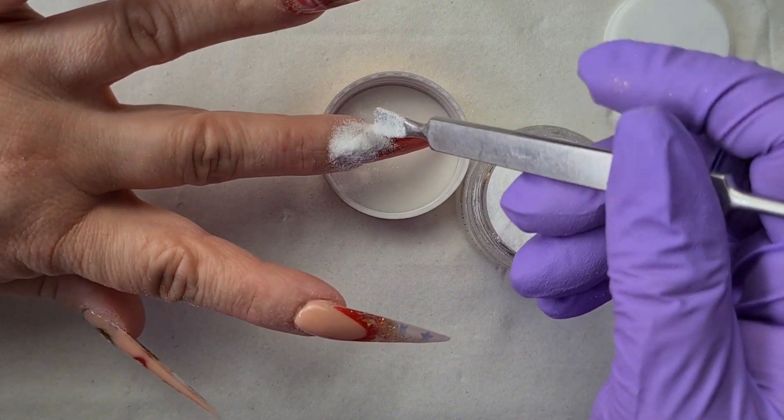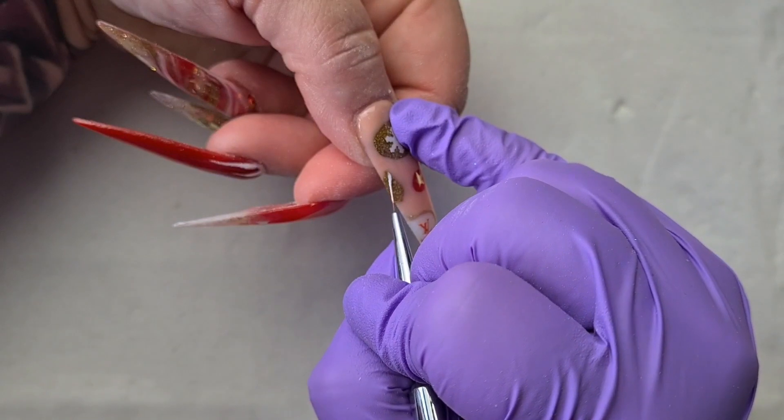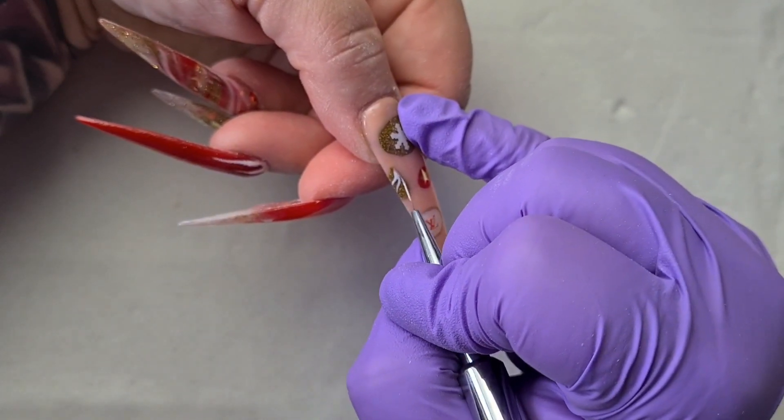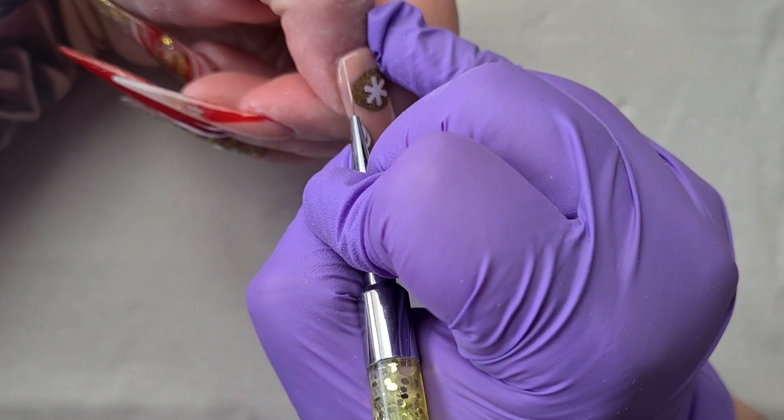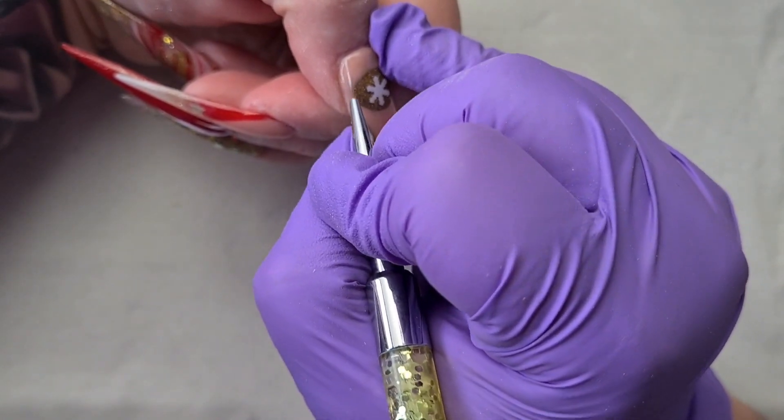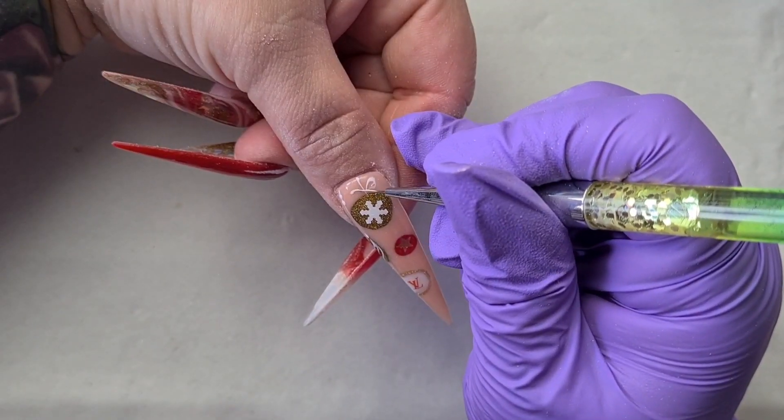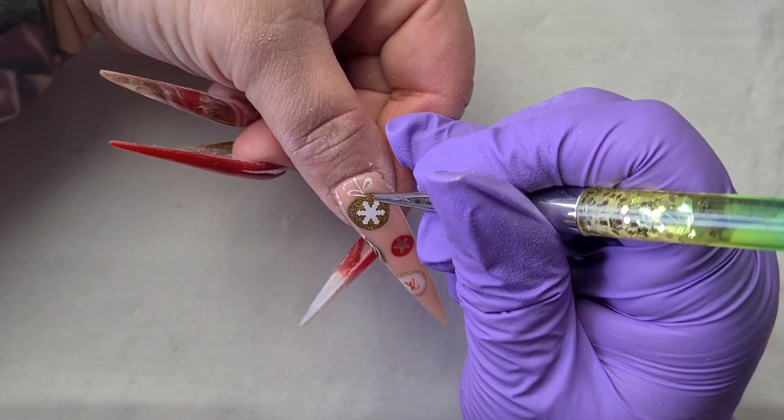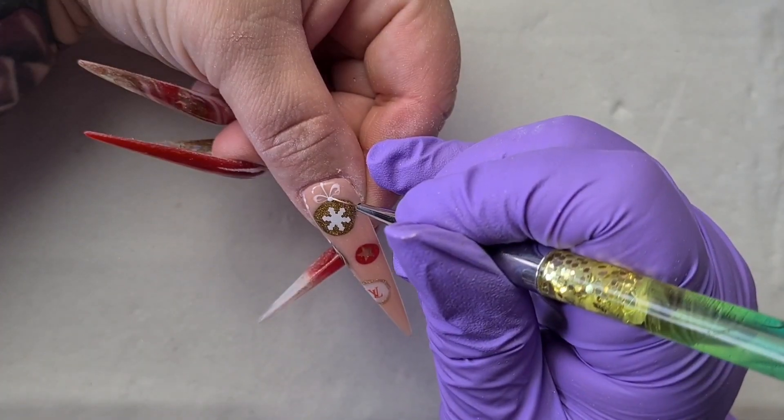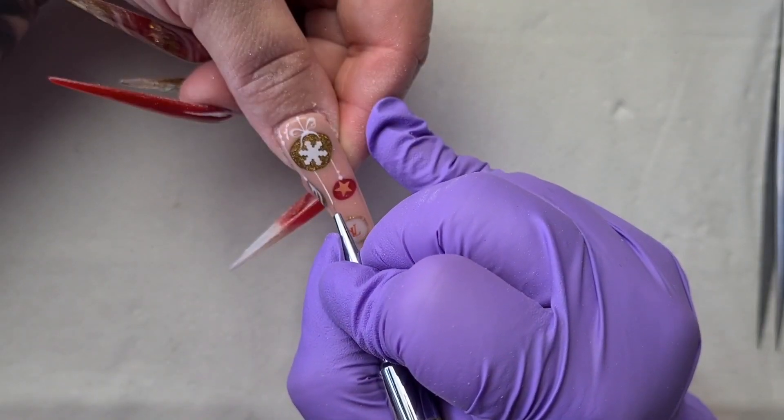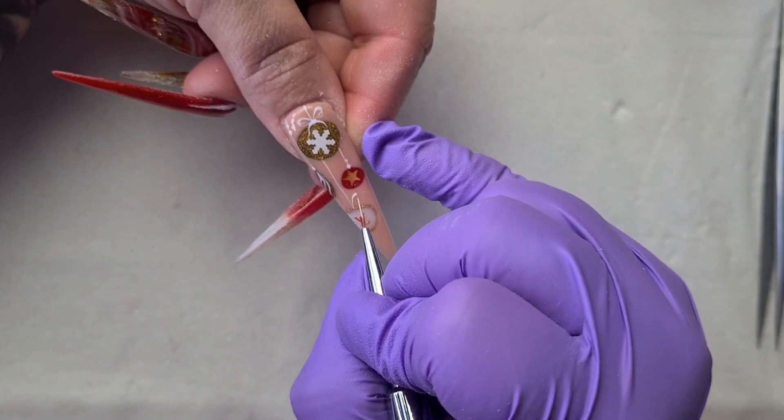Got rid of the excess and then I cure it in the lamp for 60 seconds. On my thumb I'm adding some extra little details on it just to make it more realistic. I added a little cute Louis Vuitton sticker in the middle of the white. I hope you can see it. I really like it, I just love that sticker.